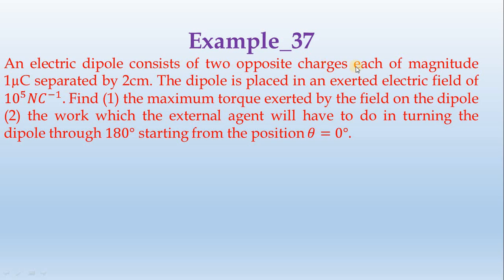An electric dipole consists of two opposite charges, each of magnitude 1 microcoulomb separated by 2 centimeters. The dipole is placed in an exerted electric field of 10 to the power 5 newton per coulomb.